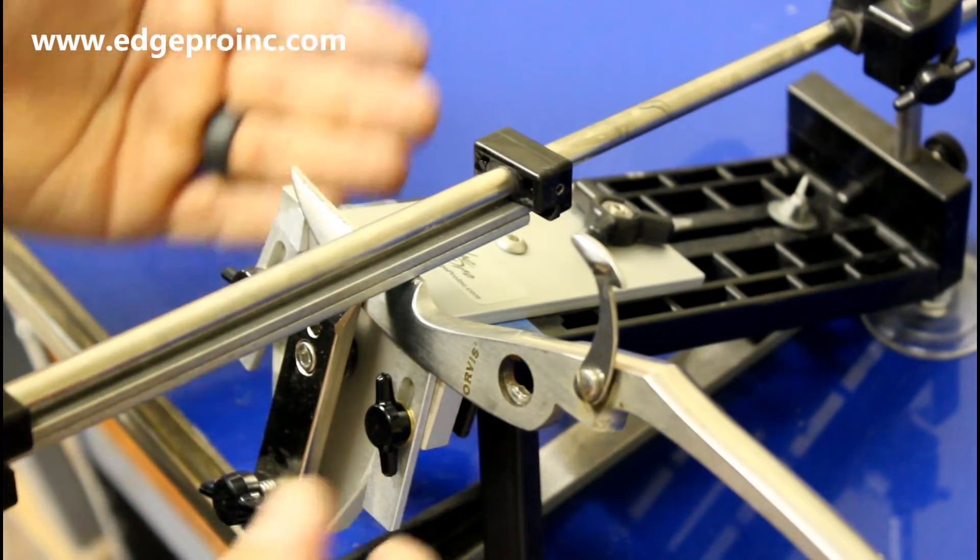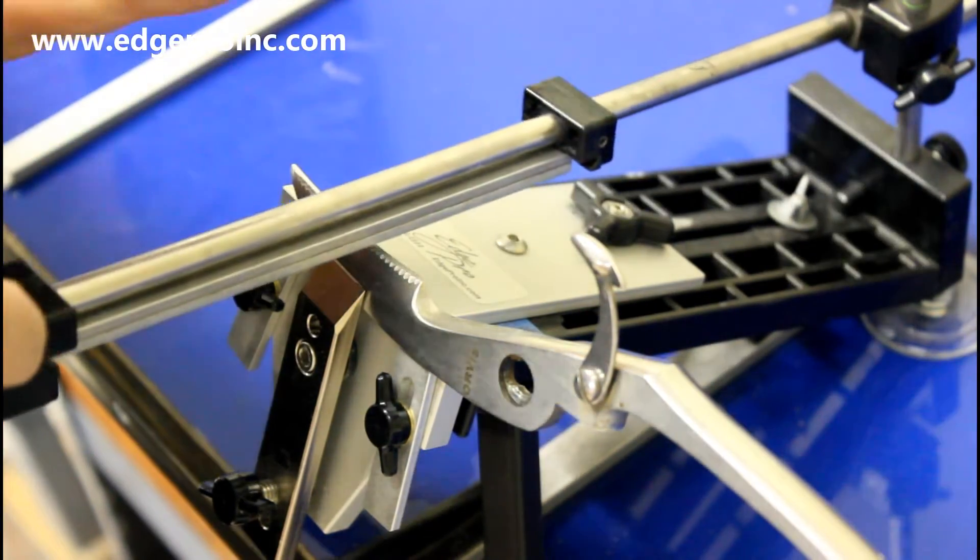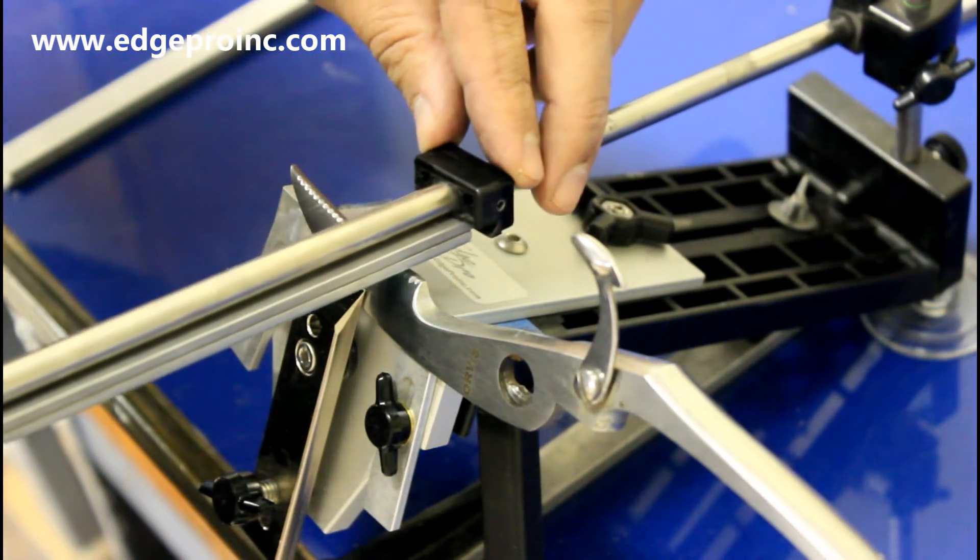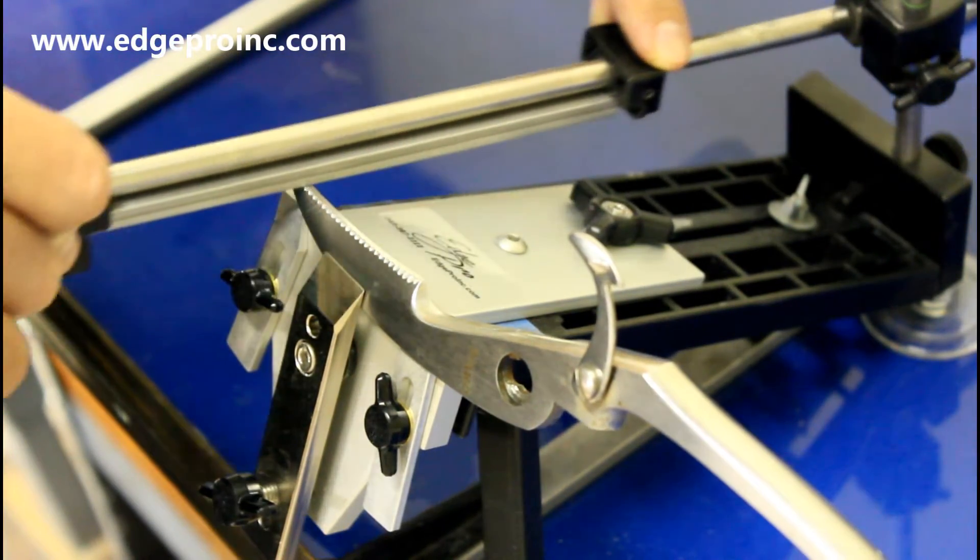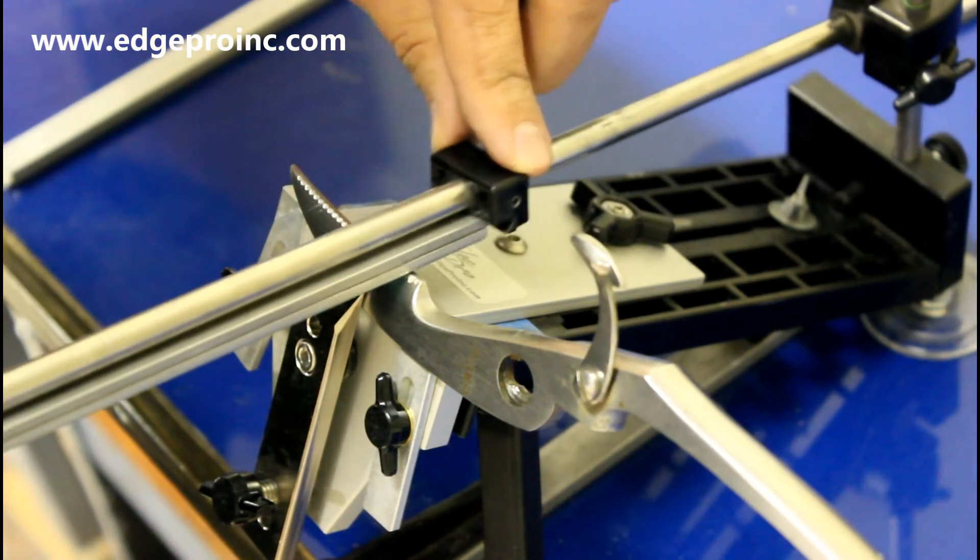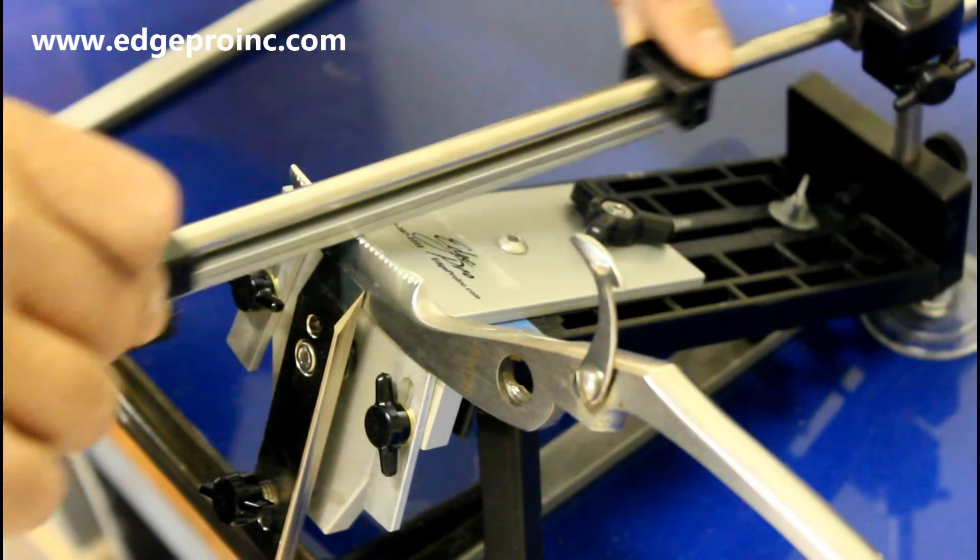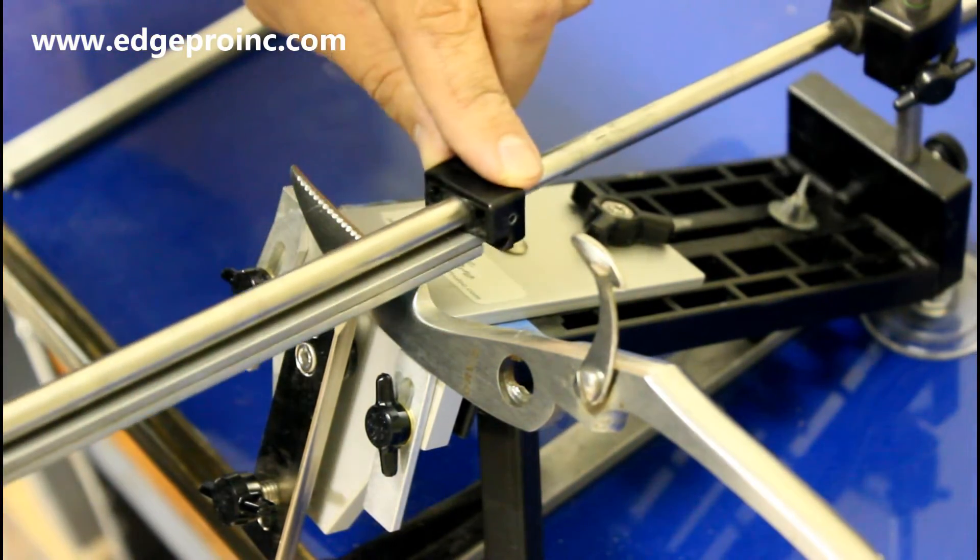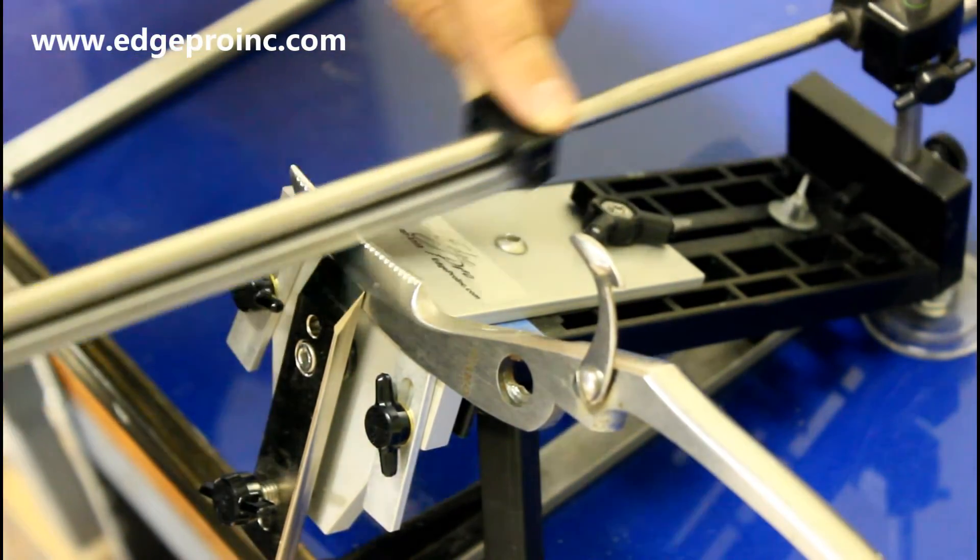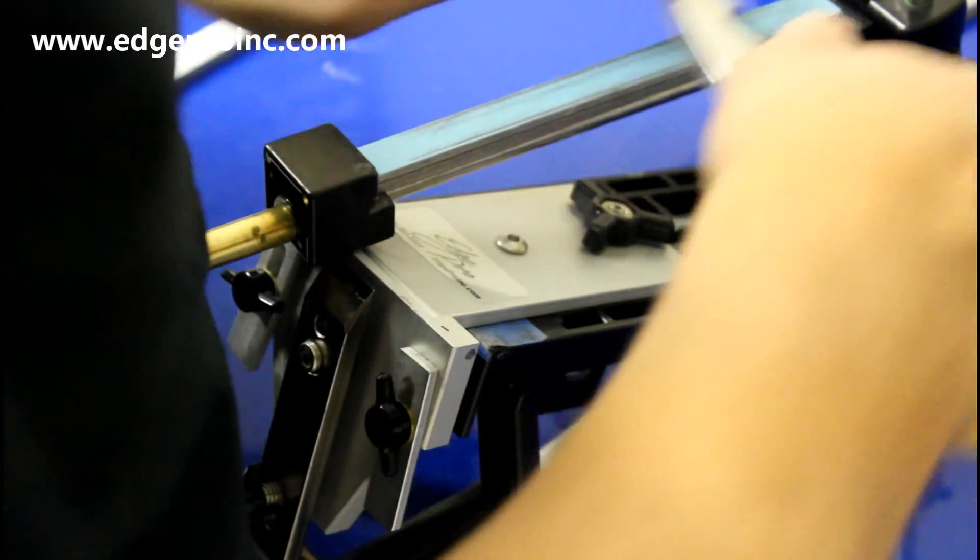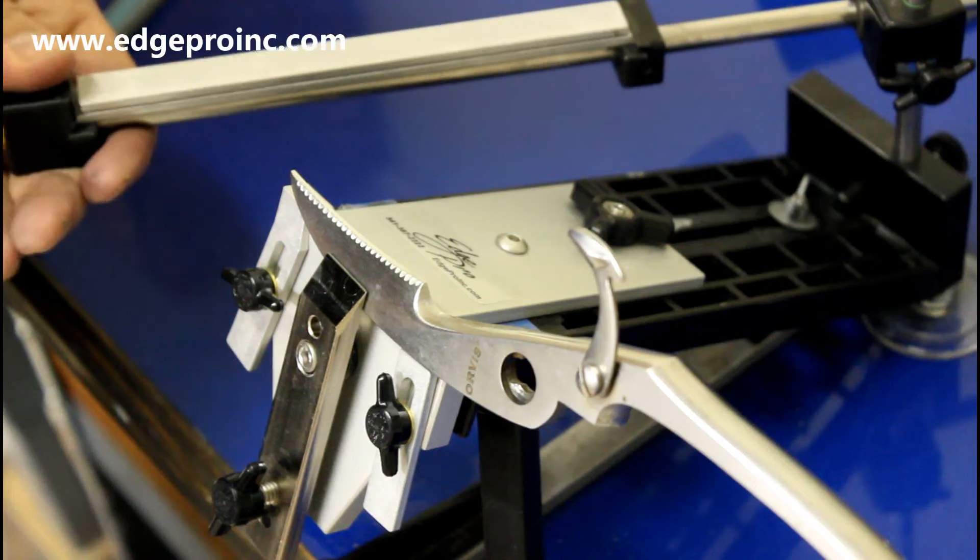When you're using the scissor attachment everything is backwards. So I normally begin on knives using just a pull stroke, but because the edge is facing in the other direction, I actually begin using just push strokes to help keep from tearing the tape. After I've gone over each section of the blade a couple times, then I'll just start gently going back and forth.